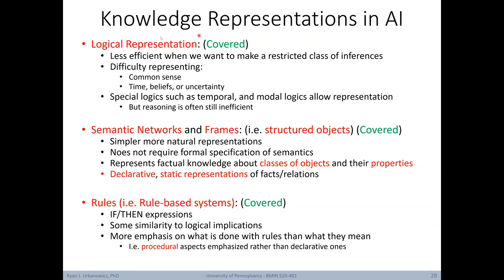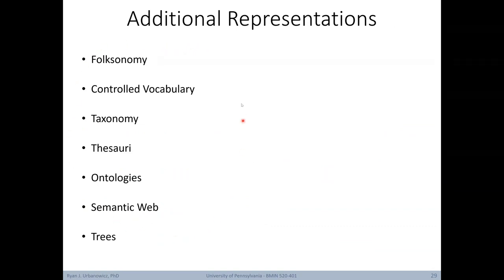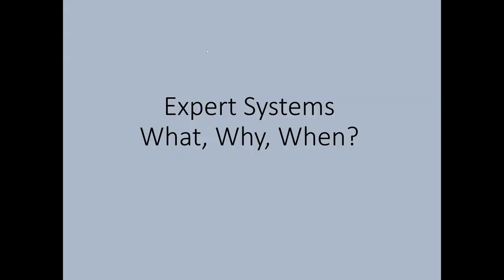We've now covered all the major forms of knowledge representation in AI used today, though this is not an exhaustive list — just those used most frequently. Here's a reminder of the many knowledge representations we've considered in this course. Now we're going to shift gears and start talking about expert systems, beginning with the what, why, and when.